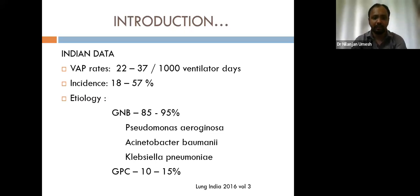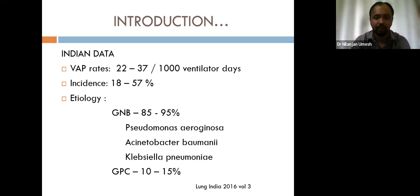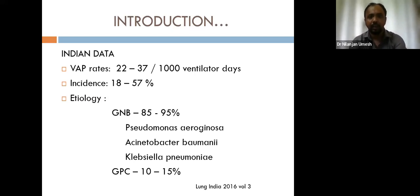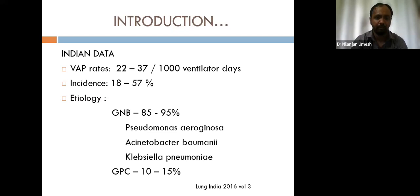The etiology in India is mainly gram-negative bacilli, about 85 to 95 percent — predominantly Pseudomonas, Acinetobacter, and Klebsiella. GPC accounts for around 10 to 15 percent. This situation is reversed in the West, where more cases of GPC VAP occur, particularly MRSA.